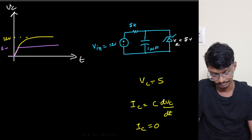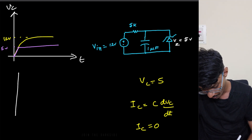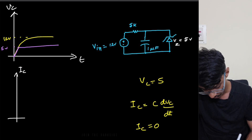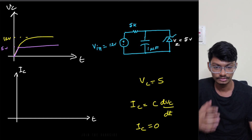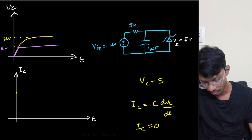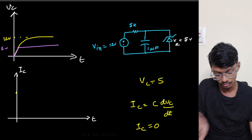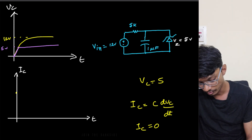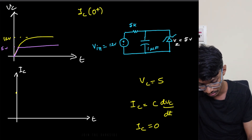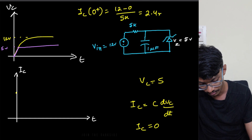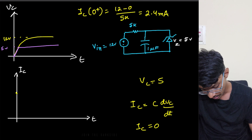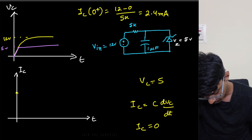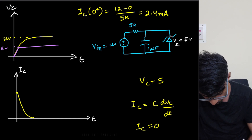Now let me also plot IC. Since VC becomes constant at five volts, dVC/dt equals zero, so IC = C·dVC/dt = zero. The capacitor reaches steady state and its voltage won't change anymore. So VC charges exponentially up to five volts then remains constant, and IC drops to zero at that point.